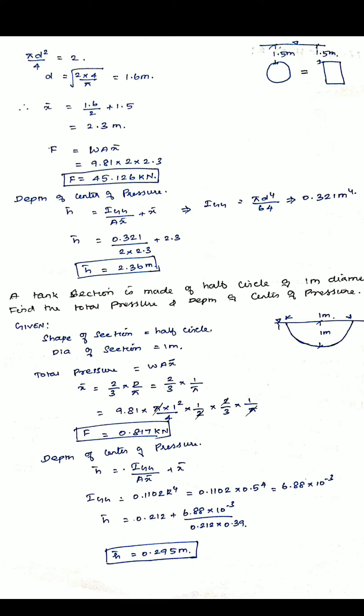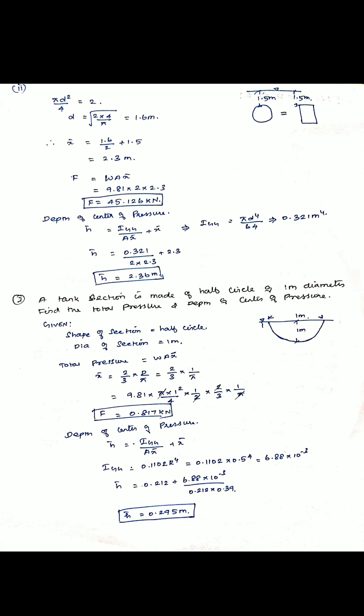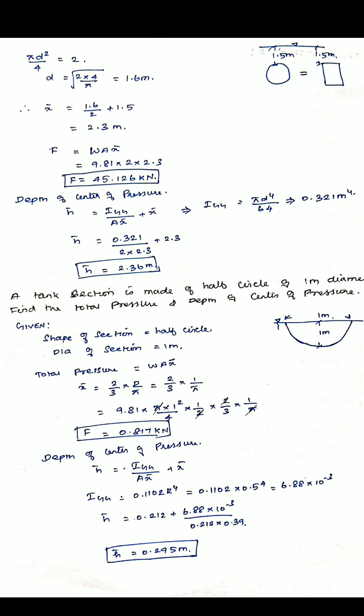Problem 2: a tank section is made of a circle of 1 meter diameter — find the total pressure and depth of center of pressure. This is a half-circle problem. Total pressure: w × A × x̄, where x̄ = (2/3) × (d/π), as given in the table. Substituting, total pressure F = 0.817 kilonewton. For depth of center of pressure: I_GG / (A · x̄) + x̄, where I_GG = 0.1102r⁴ = 6.88 × 10⁻³. x̄ = 0.295 meter.